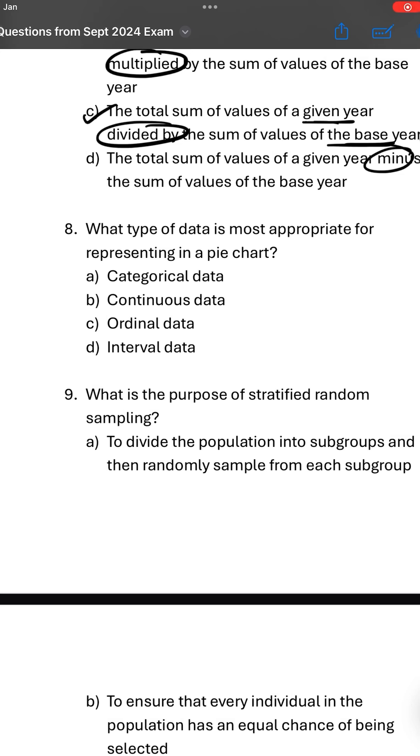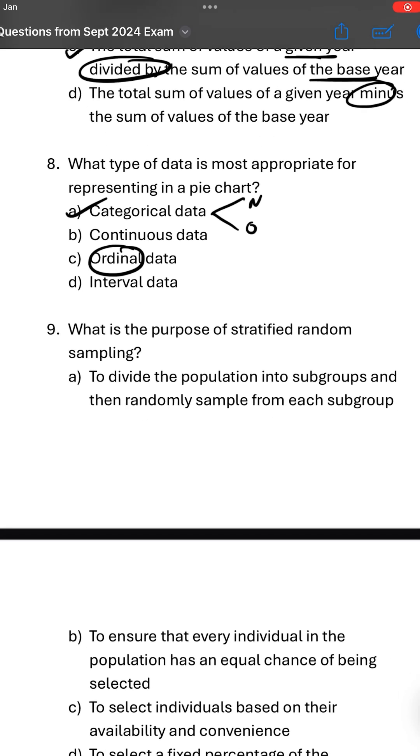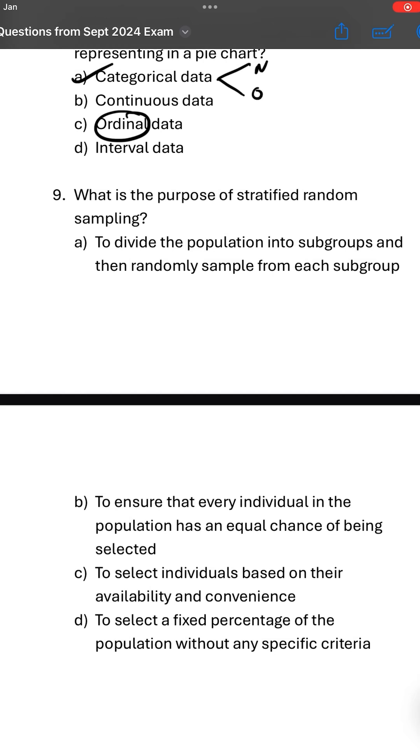What type of data is most appropriate for representing in a pie chart? Pie chart consists of categories - yes, no, maybe, state wise sales and so on. So categorical data is the correct answer. Categorical data can be nominal or ordinal. Ordinal is just part of it, so categorical is more appropriate.